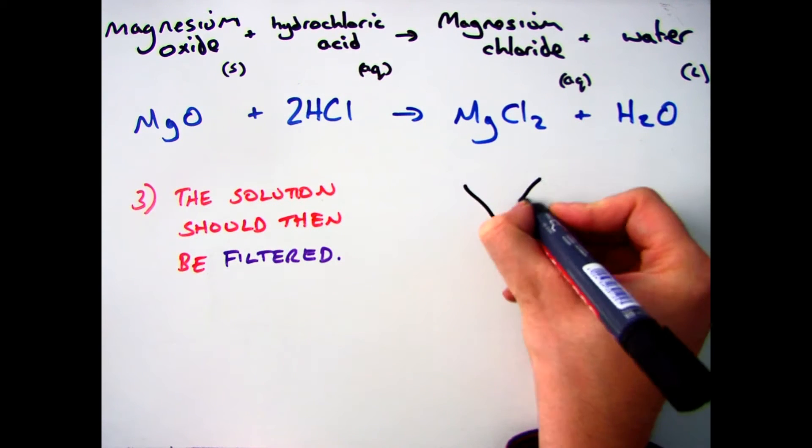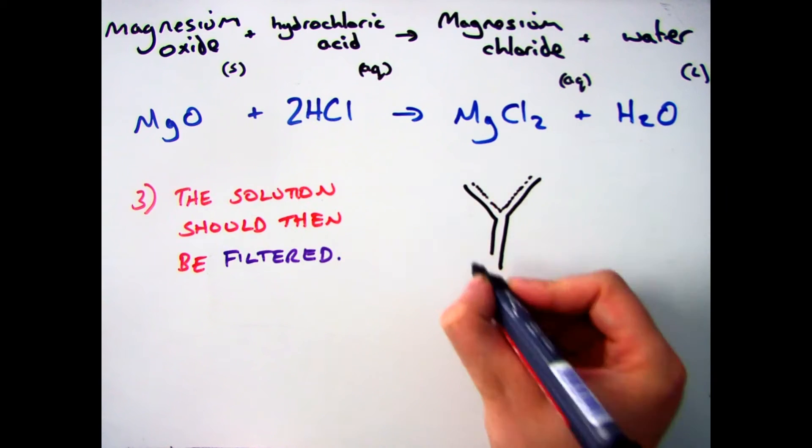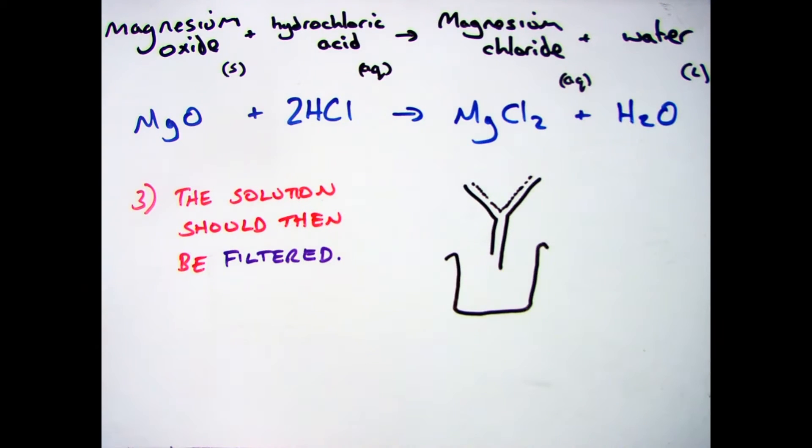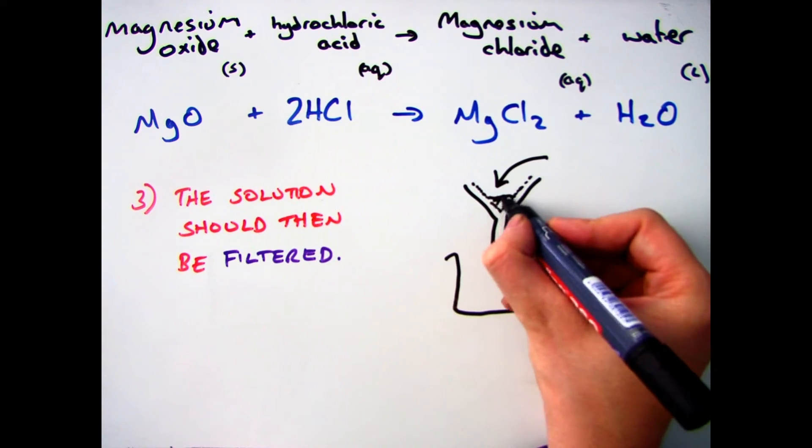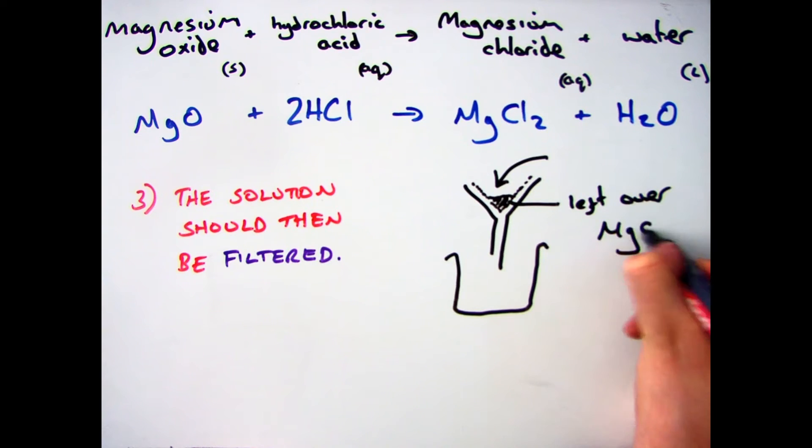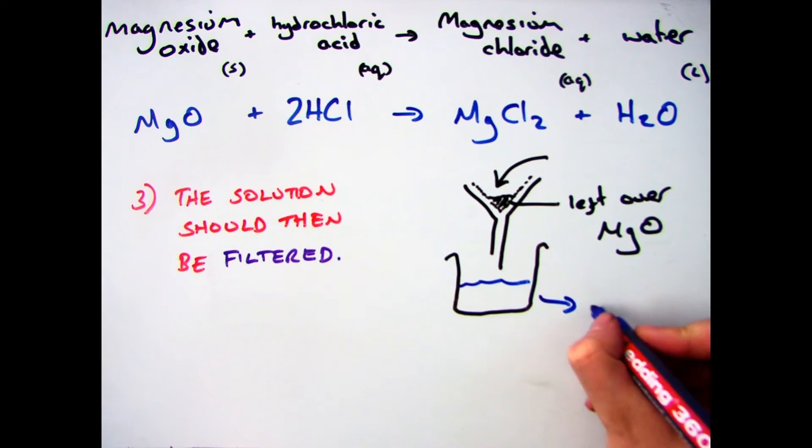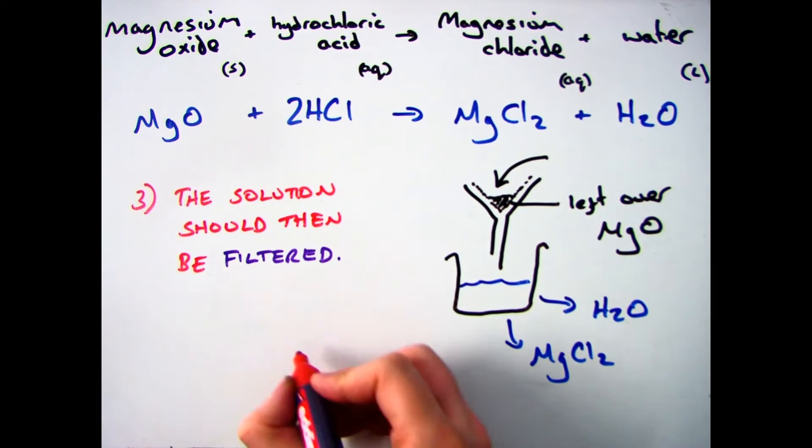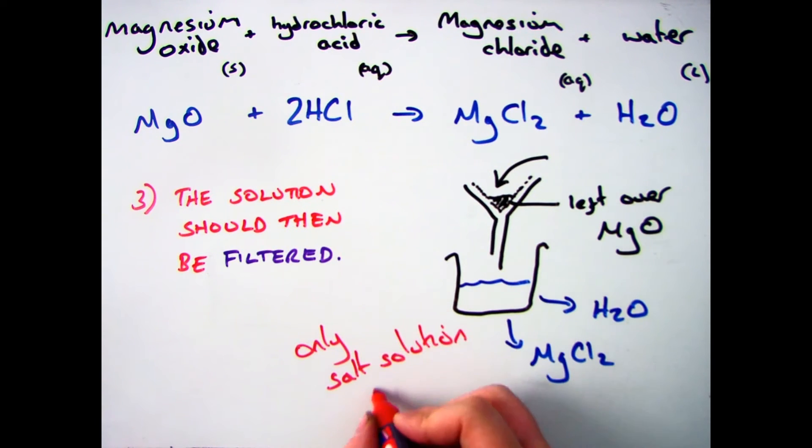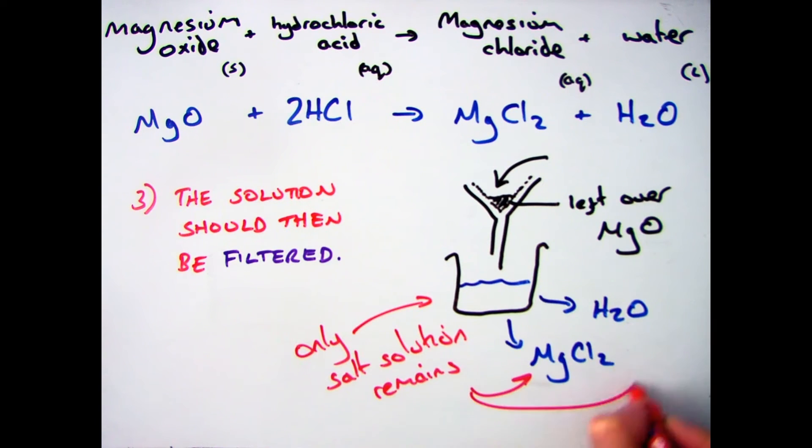And you do that by filtration. So you need to take your solution, which has got your magnesium chloride, your water, and your leftover insoluble magnesium oxide, which will no longer react because your acid is all gone, and you need to filter it through. This will leave you with your magnesium chloride and water with no impurities in there.